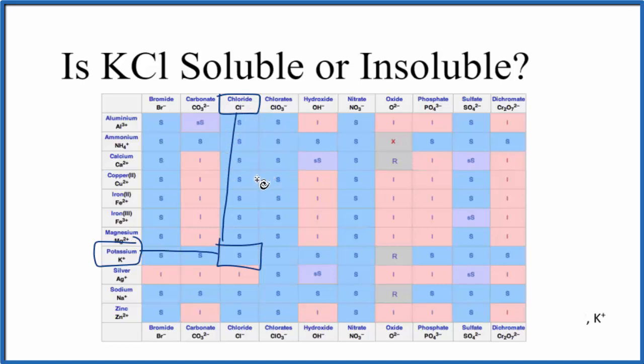There's one more way we could do this. We could just take some potassium chloride, it's a salt, put those crystals in water and see if they dissolved. That would tell us it was soluble as well.